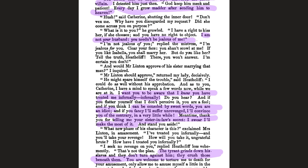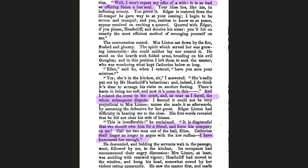Edgar addresses Catherine: 'What notion of propriety must you have to remain here after the language held to you by that blaggard?' — another pejorative for Heathcliff, an archaic word with possible connotations of darkness. Edgar says: 'I have been forbearing with you, sir — I thought you were only partially responsible' — acknowledging Heathcliff's upbringing. 'But your presence is a moral poison that would contaminate the most virtuous — I require your instant departure.'